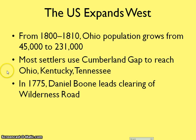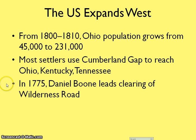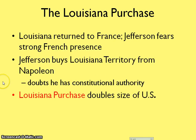The U.S. is also expanding westward. Areas like Ohio saw population growth from 45,000 to 231,000, and more people were settling in places like Kentucky and Tennessee. In 1775, Daniel Boone cleared a road that made it easier for settlers to move west. This westward expansion leads to one of the most important events during Jefferson's presidency — the Louisiana Purchase.